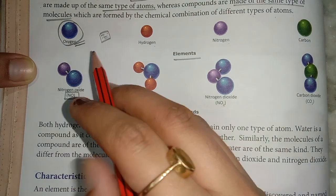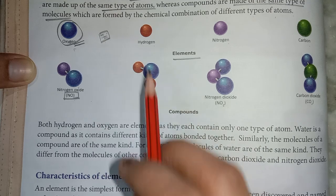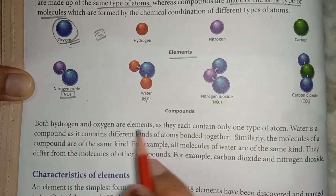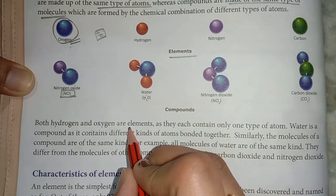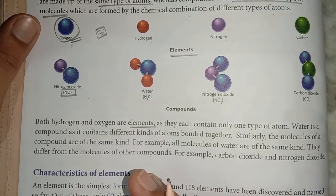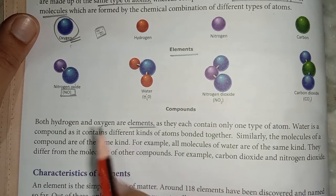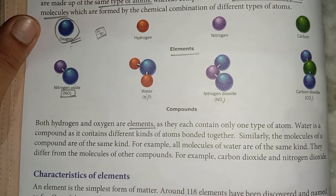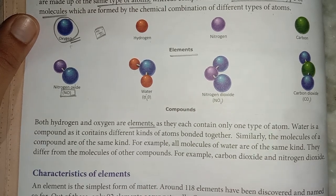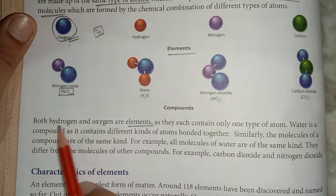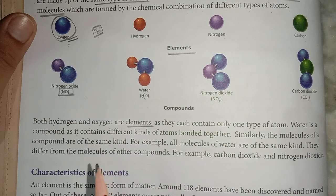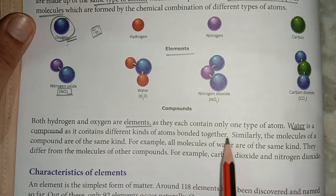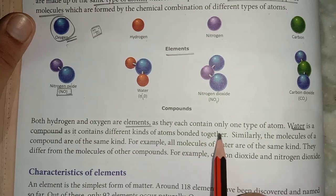Elements are made of the same type of atoms. Now let's read the characteristics of elements. Hydrogen and oxygen are both elements — they each contain only one type of atom. Water is a compound because it contains different kinds of atoms bonded together. Similarly, the molecules of a compound are of the same kind — for example, all molecules of water are the same.